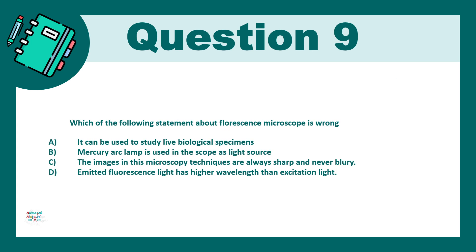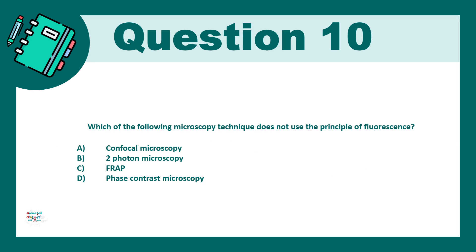Question 9: Which of the following statements about fluorescence microscopy is wrong? A) It can be used to study live biological specimens, B) A mercury arc lamp is used as the light source, C) Images in fluorescence microscopy are always sharp and never blurry, D) Emitted fluorescence light has a higher wavelength compared to the excitation light. The correct answer is option C.